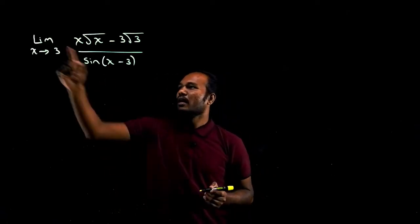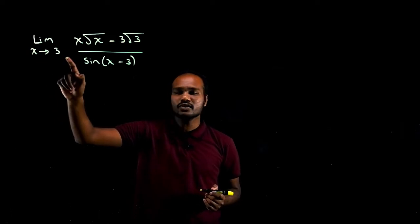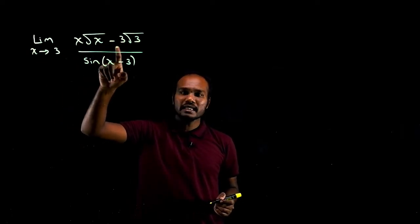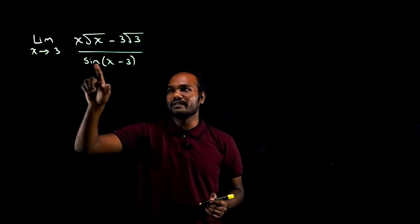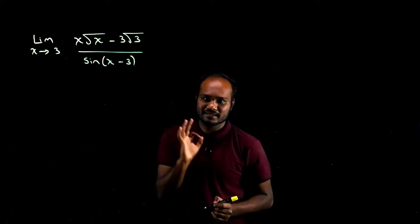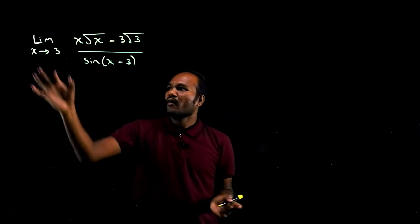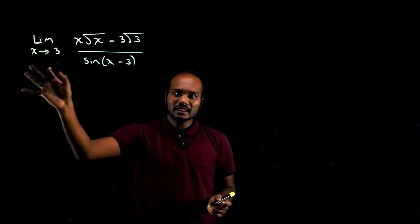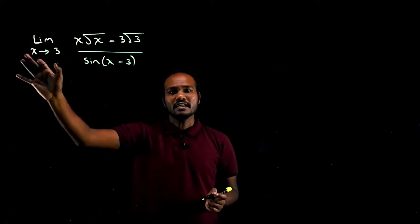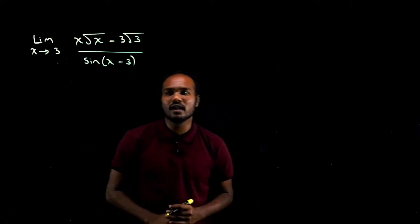Let's start with the first question. What is the first question given? Limit x tends to 3 of x√x minus 3√3 over sine of (x minus 3). This is the given question. What is the golden rule of limits? Whenever you see the limit, substituting the limit value is the golden rule.